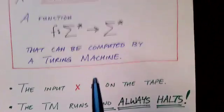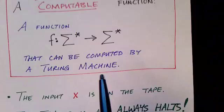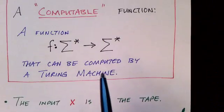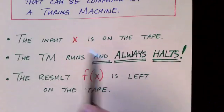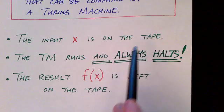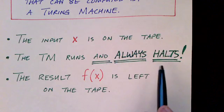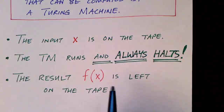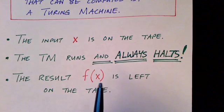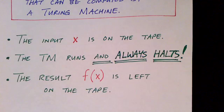So if a function is computable, then there exists a Turing machine that will compute the function. A Turing machine that, when given x as its input on the tape, will run and always halt and leave the output f(x) on its tape. That's a computable function.